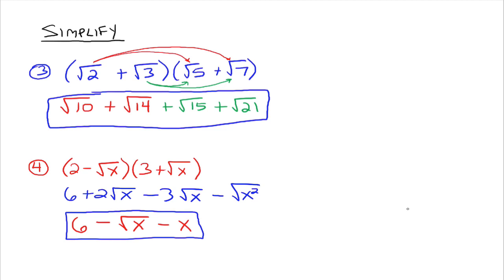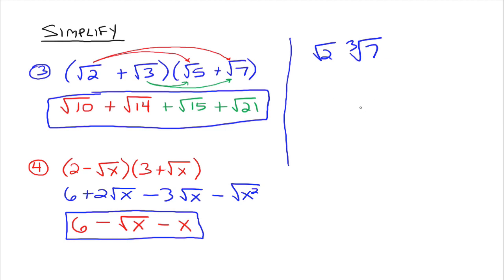The good news is we're using the same concepts as when multiplying polynomials. The only new thing is that in order to multiply radicals together, they have to have the same index — square root times square root, cube root times cube root. If they have the same index, we can multiply the radicands together. If they do not have the same index, say the square root of 2 times the cube root of 7, we just leave it as is. Study well — please let me know if you have any questions.